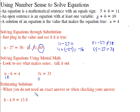Estimating solutions: when you don't need an exact answer or when checking your work, you can estimate a solution to get close. Here, h - 4.9 = 13.8. I can change this to estimate: h - 5 = 14. So what number minus 5 equals 14? That would be close to 19. You'll see that's pretty close, and we're done.